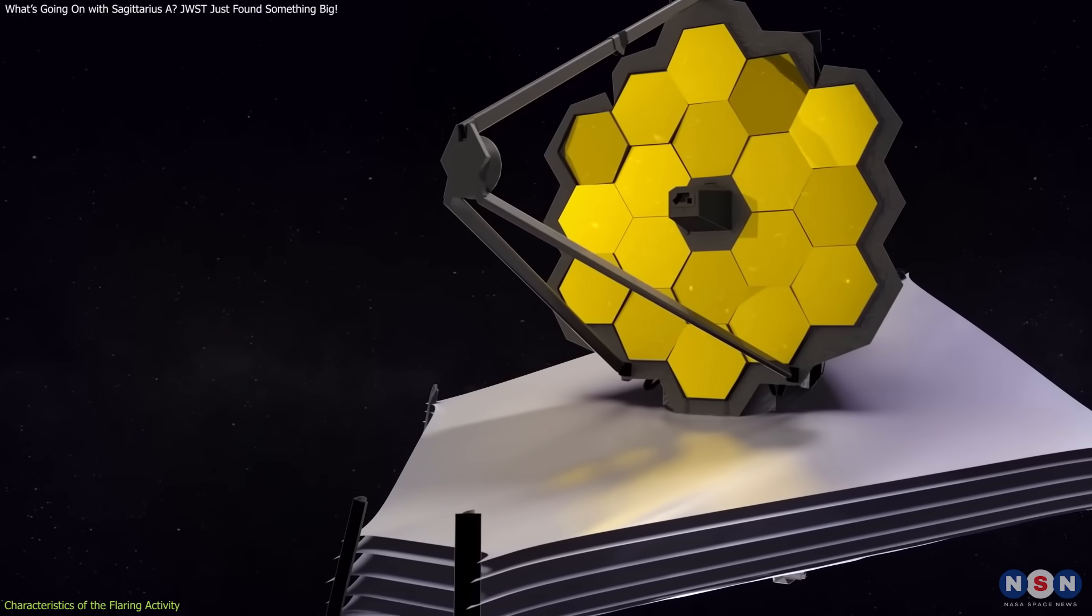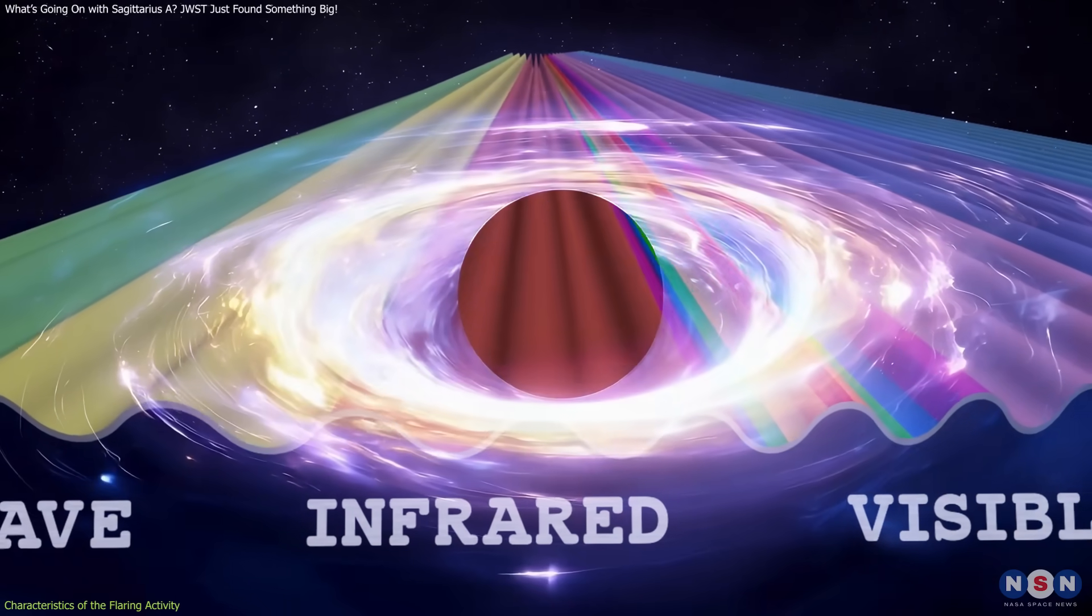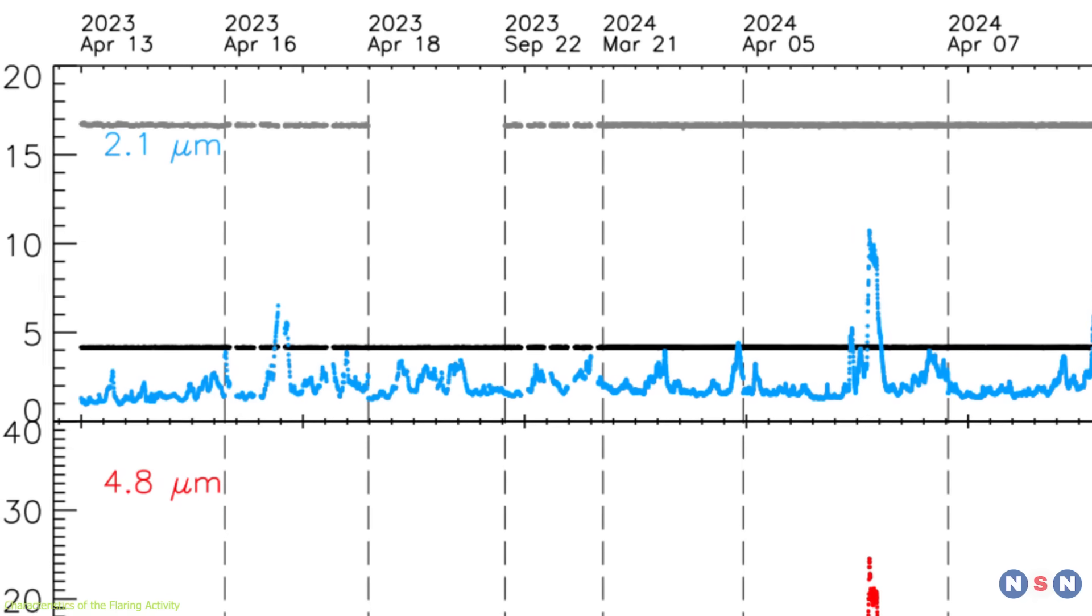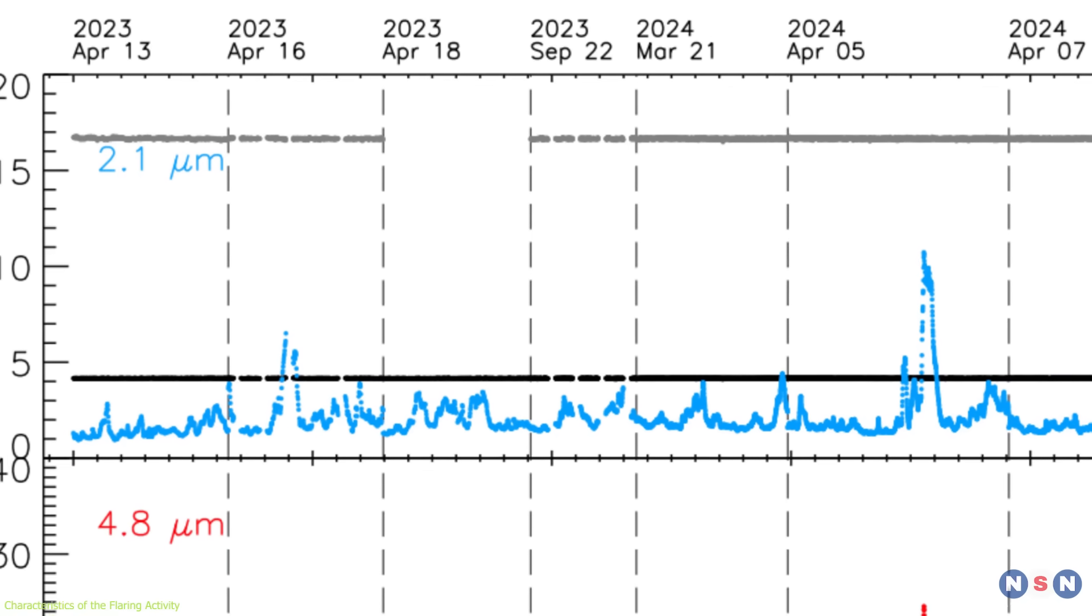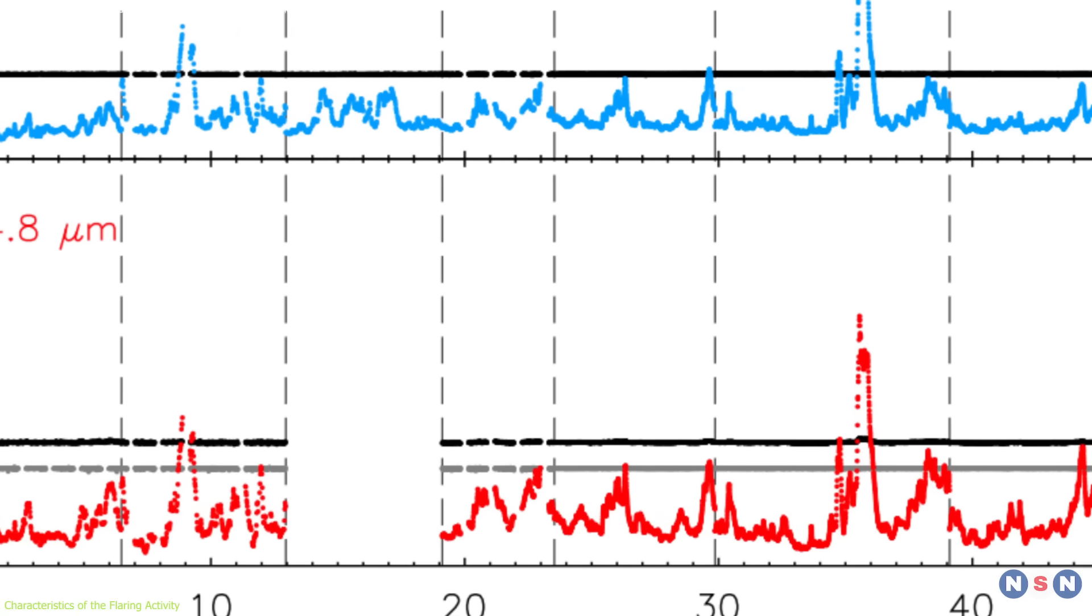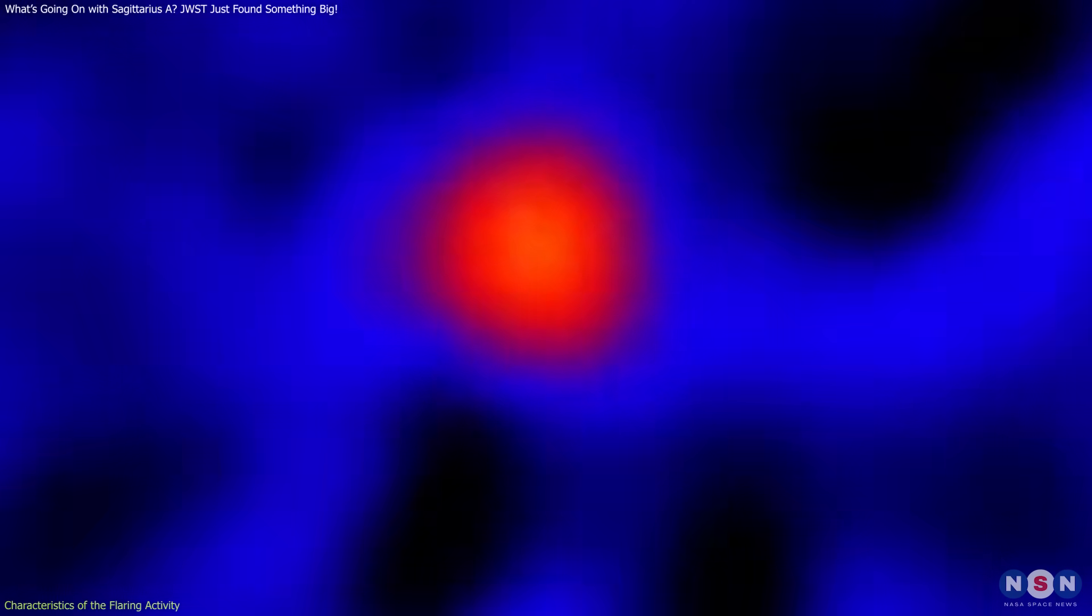A particularly compelling aspect of Webb's findings is the time delay observed between different wavelengths during flaring events. Specifically, changes in the shorter wavelength, 2.1 microns, emissions were detected to precede those in the longer wavelength, 4.8 microns, by intervals ranging from a few seconds up to 40 seconds.